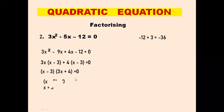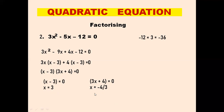We can see x minus 3 is common to both terms, so we write (x minus 3)(3x plus 4) equals 0. Therefore either x minus 3 equals 0, giving x equals 3, or 3x plus 4 equals 0, giving x equals minus 4 by 3. So we have got two values of x, which are 3 and minus 4 by 3. This is how you proceed with the factorizing method.